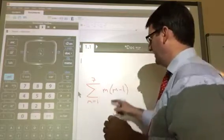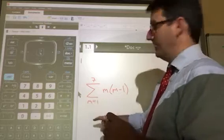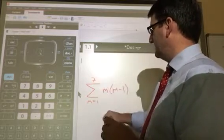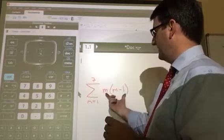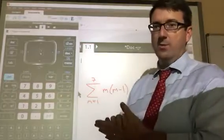So we're asked to evaluate this series from m equals 1 to 7. So the first seven terms of this sequence added together, m times m minus 1.